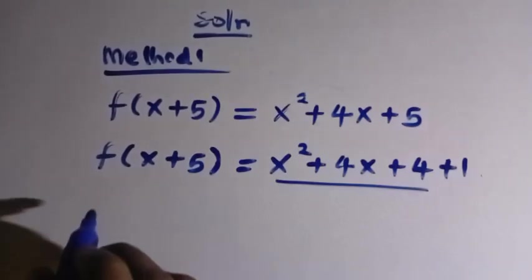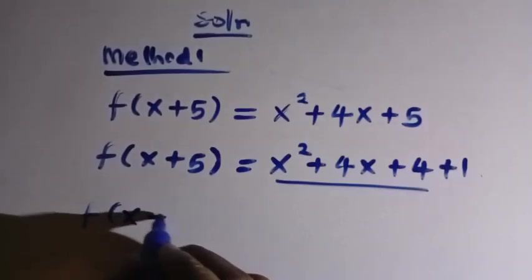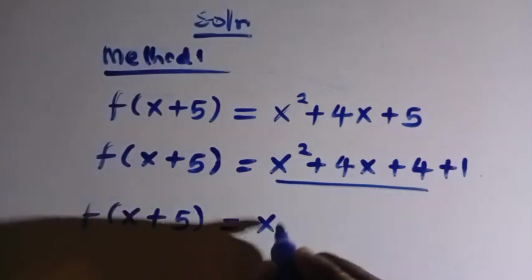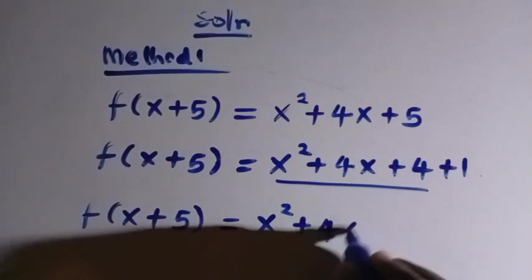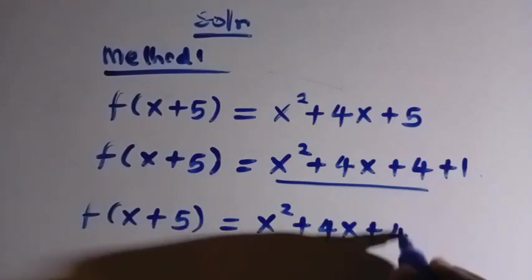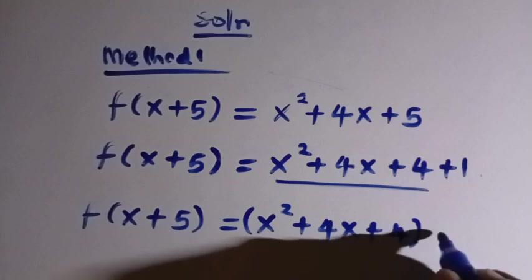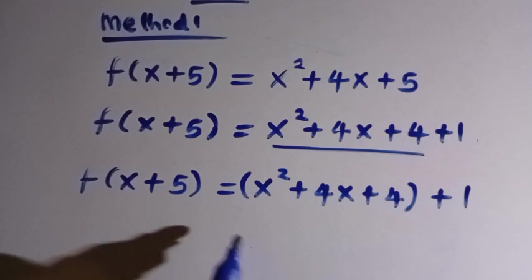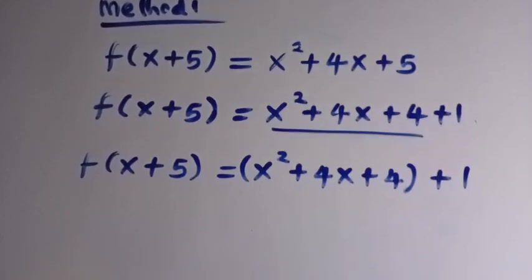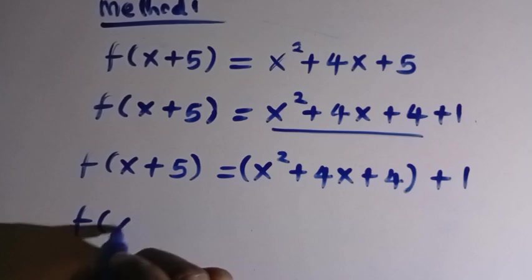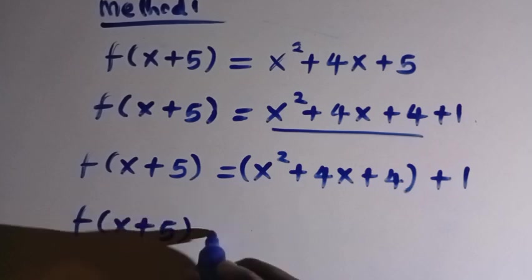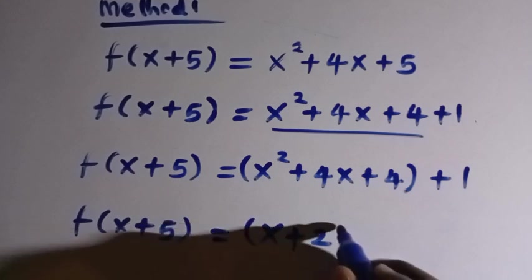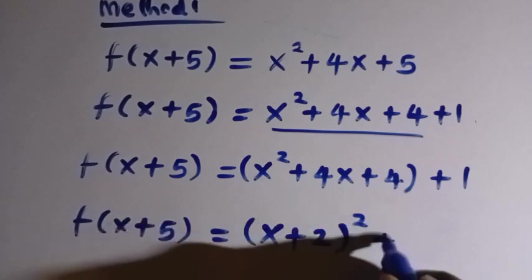If I try to combine this together, then we have f of x plus 5 equals x squared plus 4x plus 4, all in a bracket, plus 1. We note that x squared plus 4x plus 4 is a perfect square, so the whole of this becomes x plus 2, all squared, plus 1.